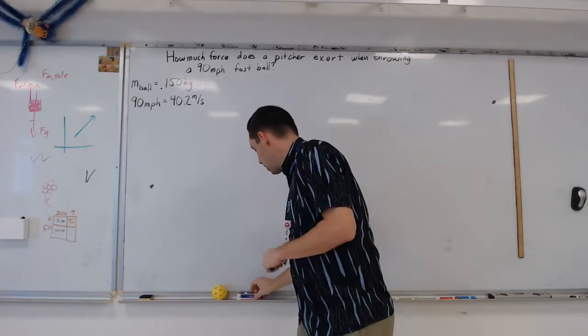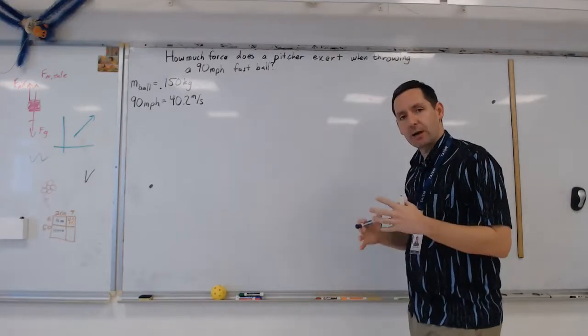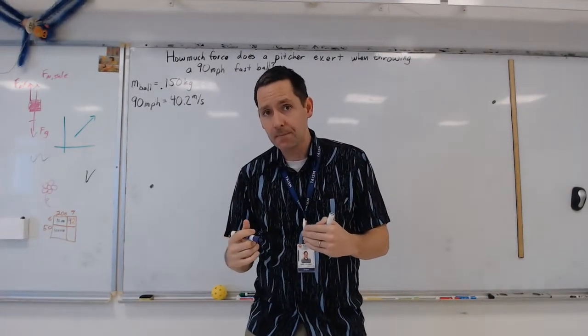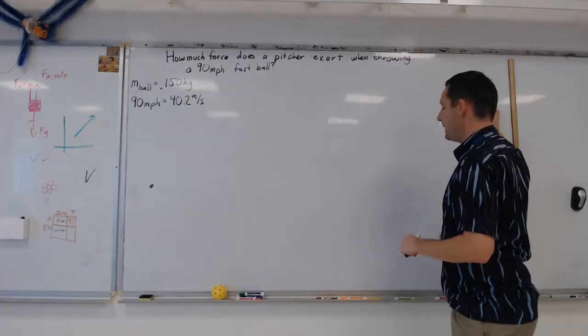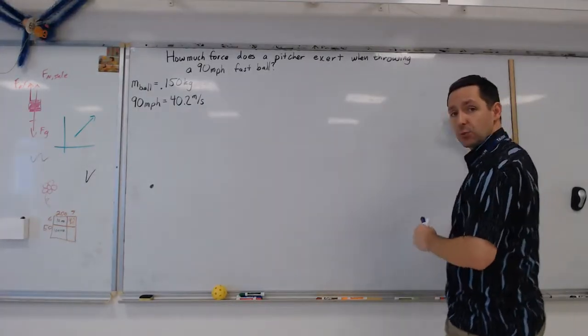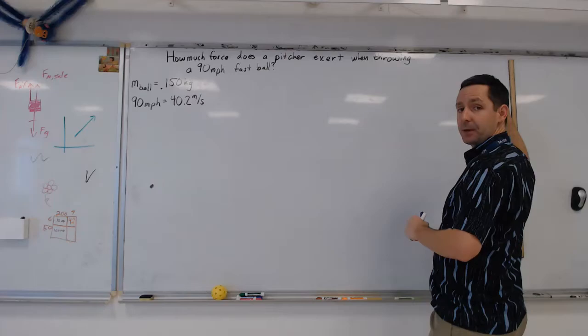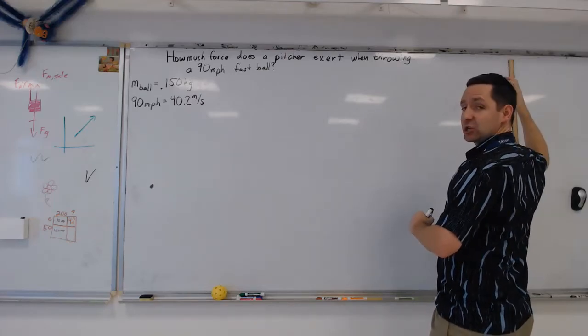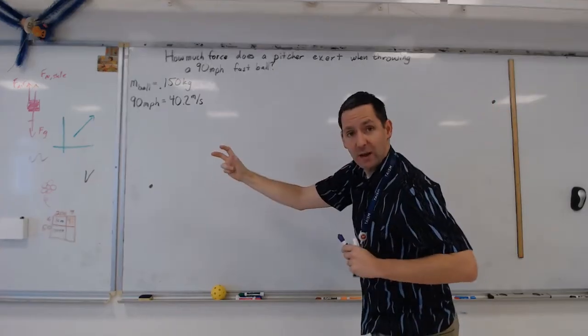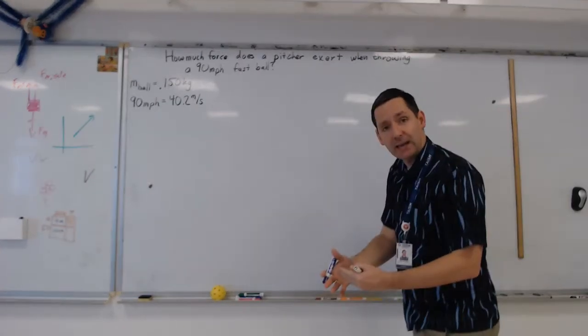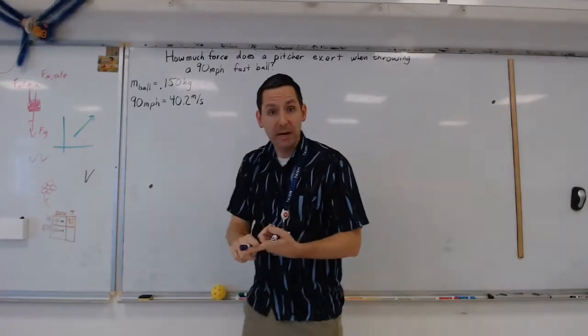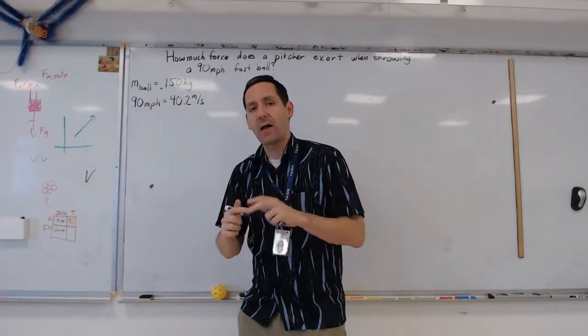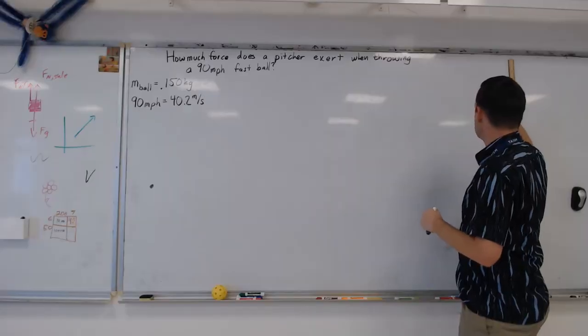So what we're going to do first is talk about what types of energy are present at each of these points. We're going to start up here. At this point, when I have the baseball up here, there's no kinetic energy. It's essentially at rest right before I start to make that launch. There's no springs, which means there's no elastic potential energy. So all we've got there is gravitational potential energy.